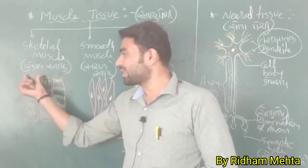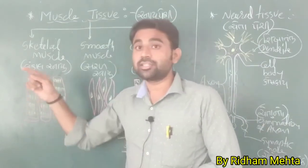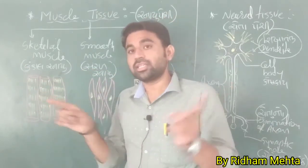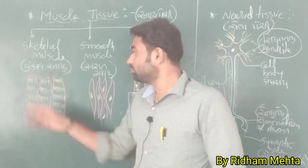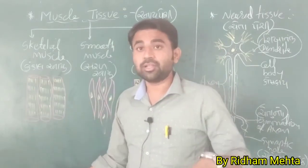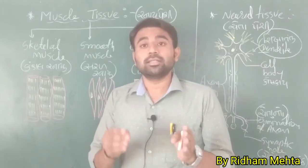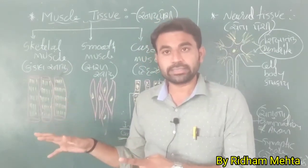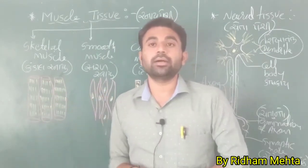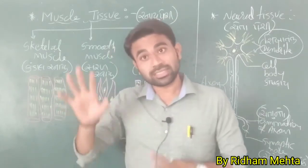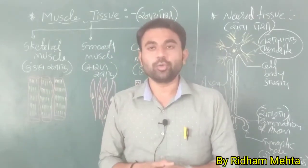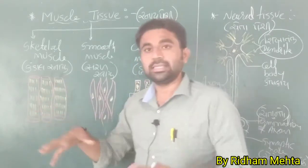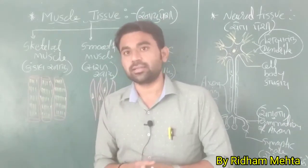Another important feature is that muscle cells are continuous — there is no cell membrane between two muscle cells. Because the cell is continuous, there are many nuclei present in the muscle cell. So the skeletal muscle cells are multi-nucleated.